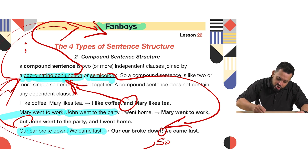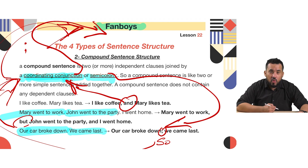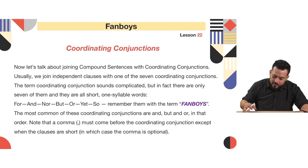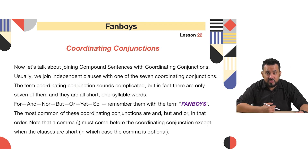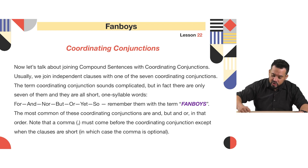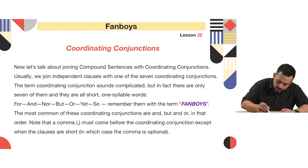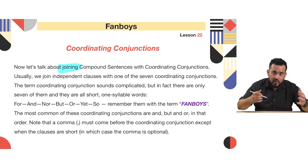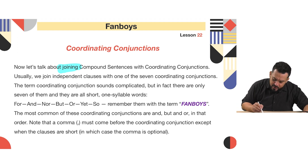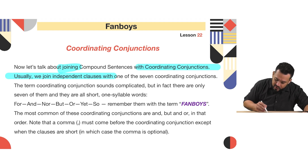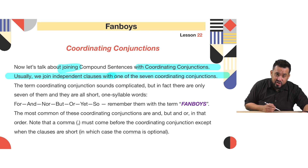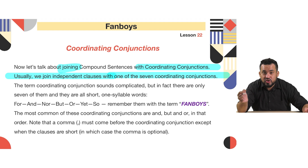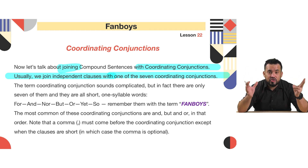Now we've been talking about coordinating conjunctions and FANBOYS — what are they? Coordinating conjunctions are used to join two simple sentences into a compound sentence. We usually join independent clauses with one of the seven coordinating conjunctions. So how many are there? There are seven coordinating conjunctions.